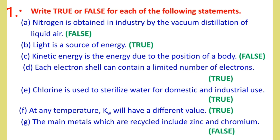Number B: Light is a source of energy used to do the position of a body. Kinetic energy is the energy of a moving body.